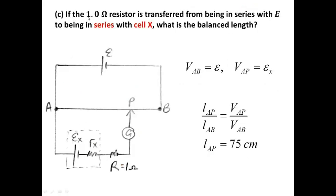Question C: if the 1-ohm resistor is transferred from being in series with EMF E to being in series with cell X — so the resistor R equals 1 ohm is now here in the lower circuit with EX. What is the new balance length? VAB equals EMF E, whereas VAP equals EX.